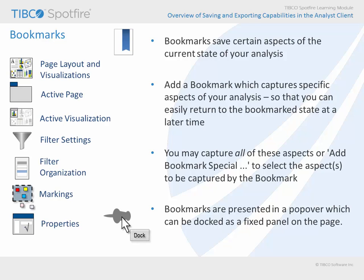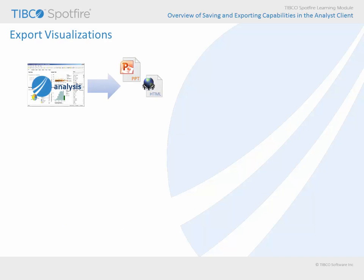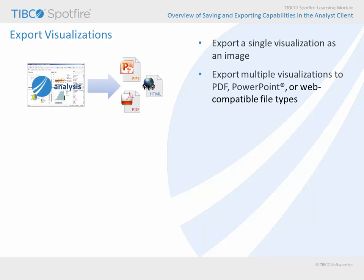Another way of capturing a fixed snapshot of the current state of your analysis is to export a visualization or visualizations. Options available include the ability to export a single visualization as an image, or export multiple visualizations to PDF, PowerPoint, or web-compatible file types which support an HTML document. If you elect to export to PowerPoint, the elements which make up an image may be ungrouped and edited.